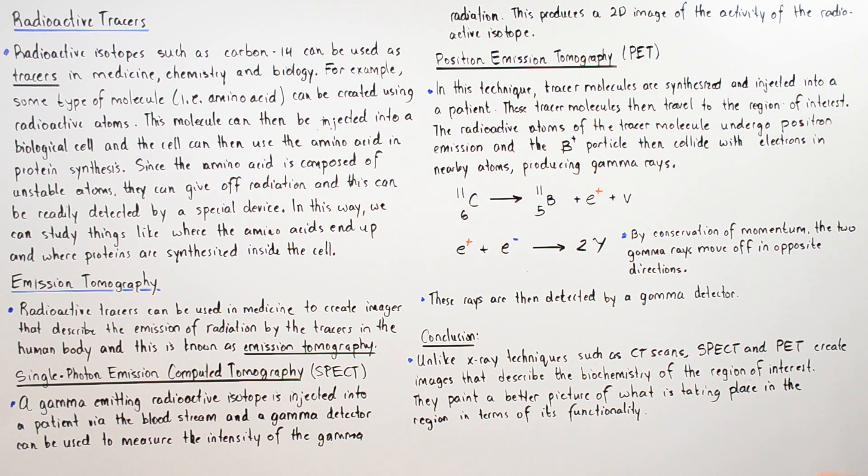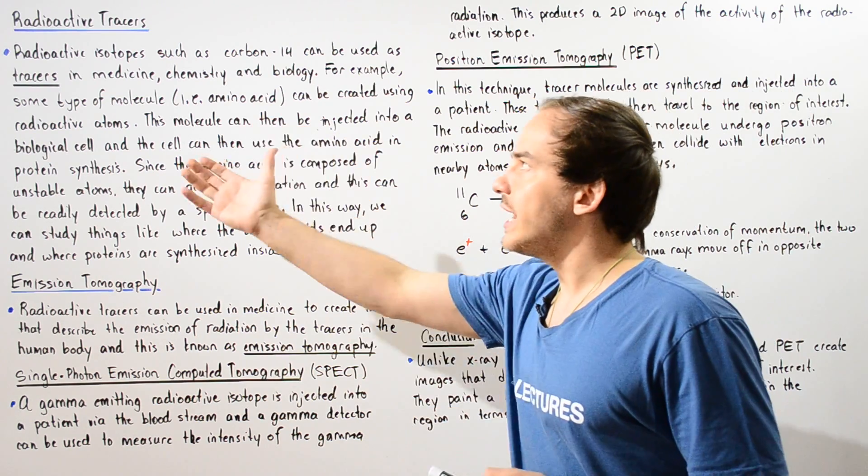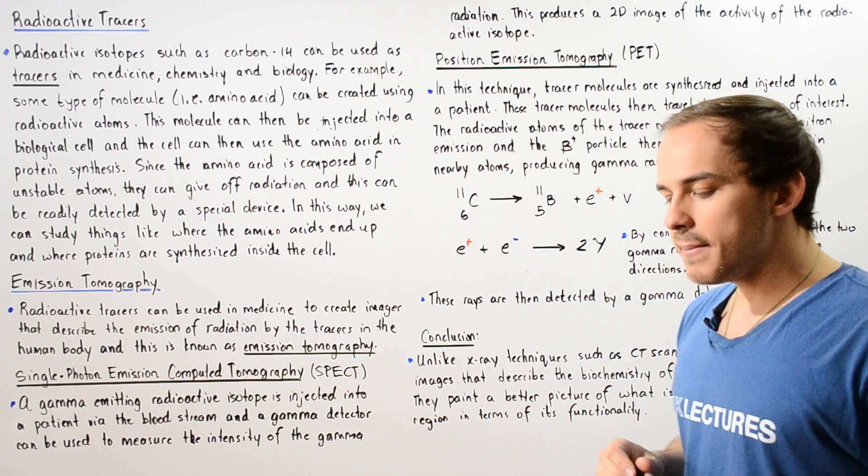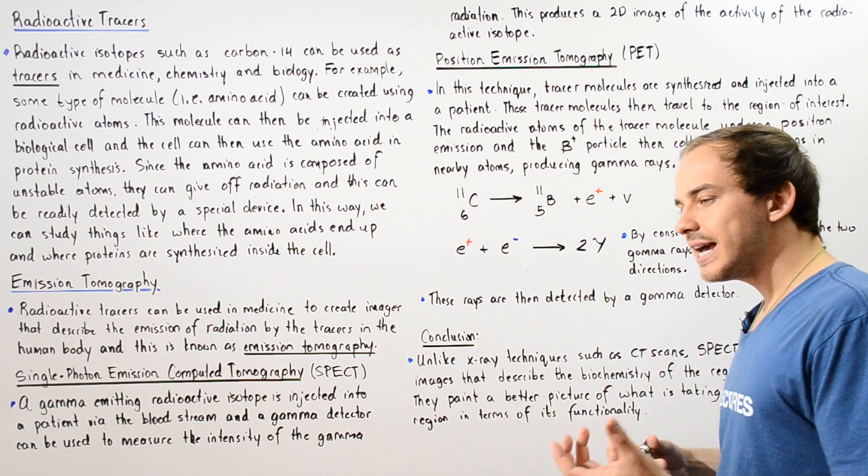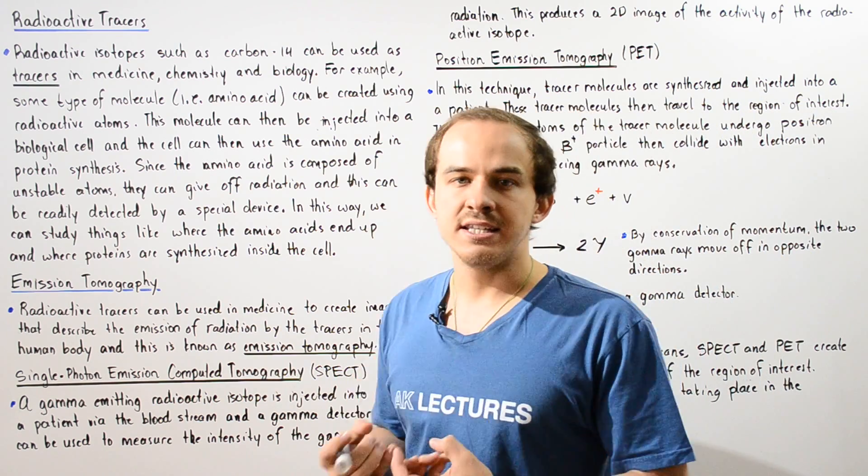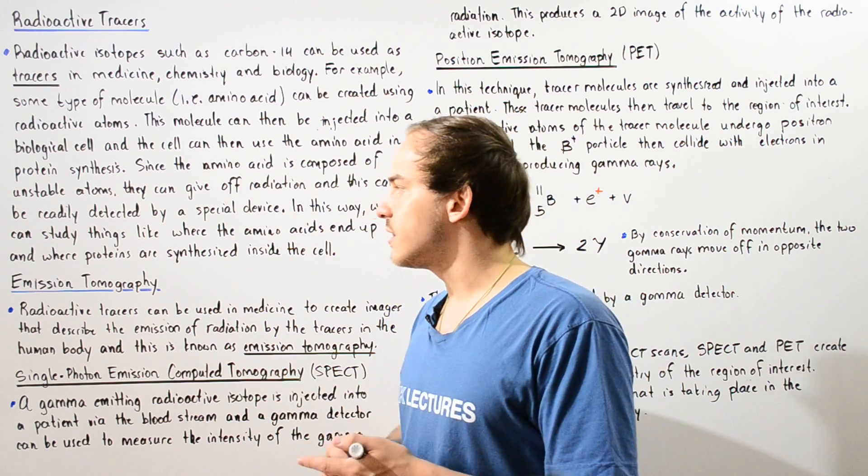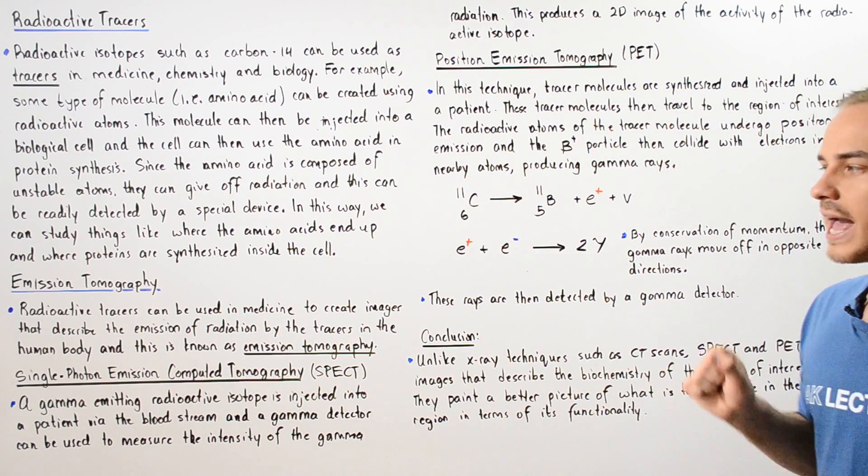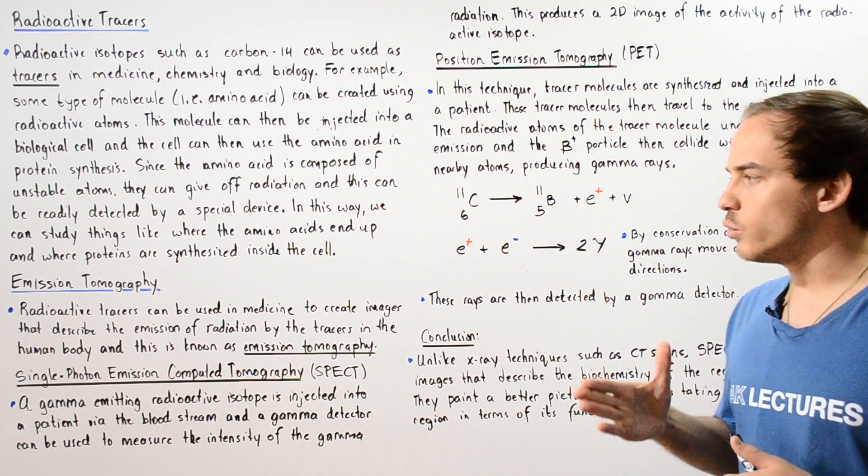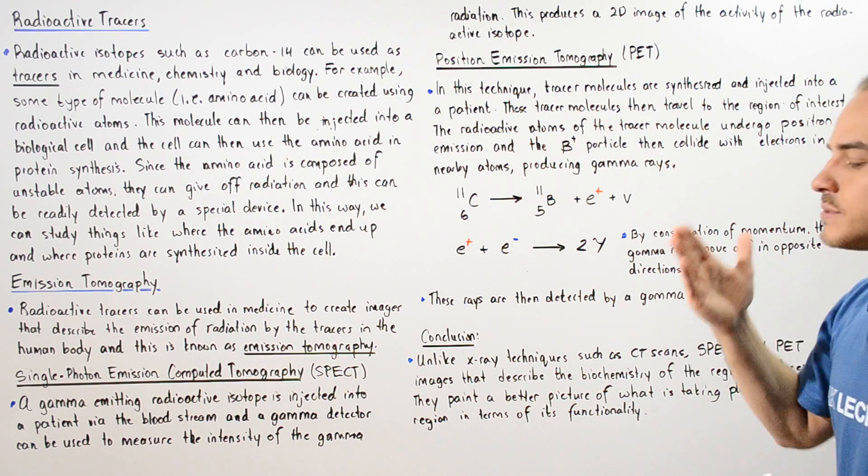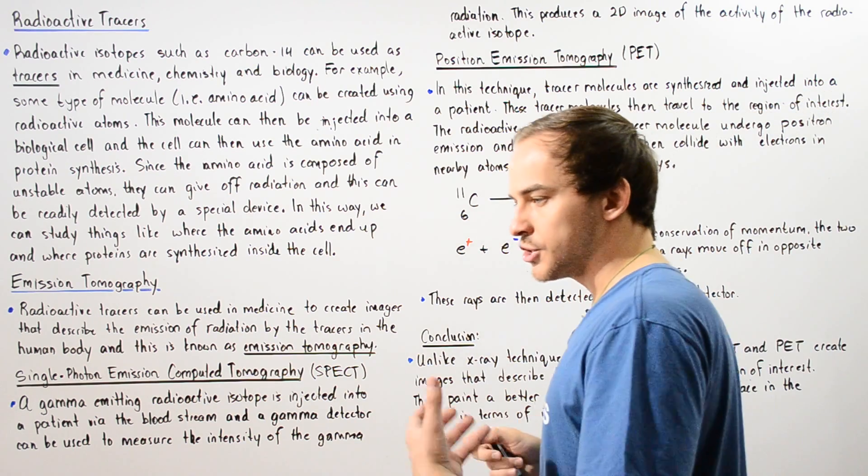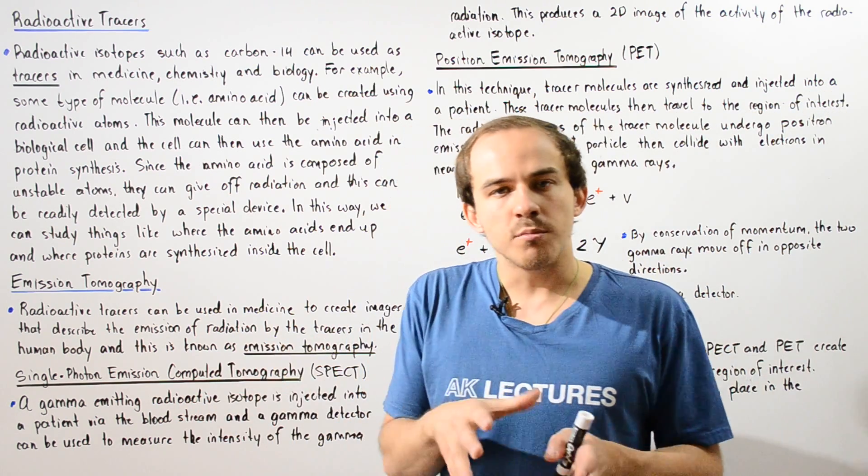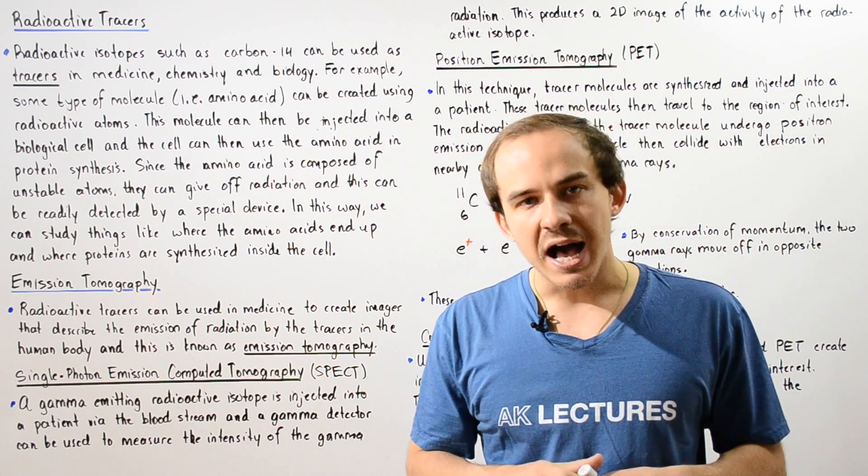Once again, we can use radioactive tracers to basically help us understand how certain processes function within places like our biological cell as well as the human body. We can use these types of techniques, for example, to determine where a tumor is located within the body.